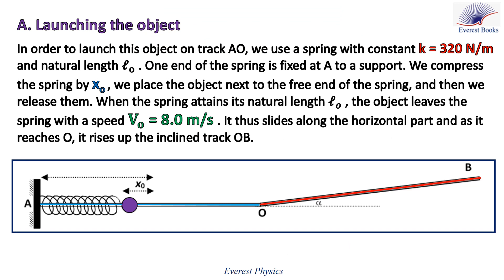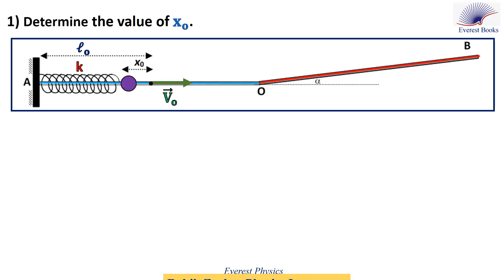Let's start with Part A. To launch the object on track AO, we use a spring with constant 320 newtons per meter and natural length L0. One end of the spring is fixed at A to a support. We compress the spring by x0, place the object next to the free end, and release. When the spring returns to its natural length L0, the object leaves the spring with a speed of 8 meters per second, slides along the horizontal part, and rises up the inclined track OB. Determine the value of x0.